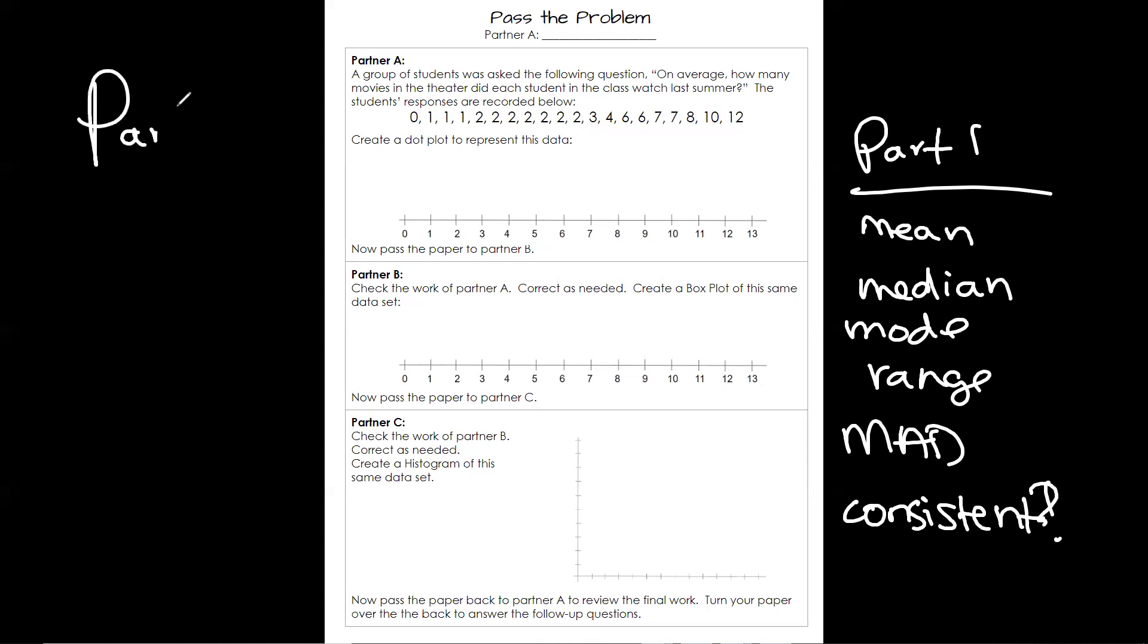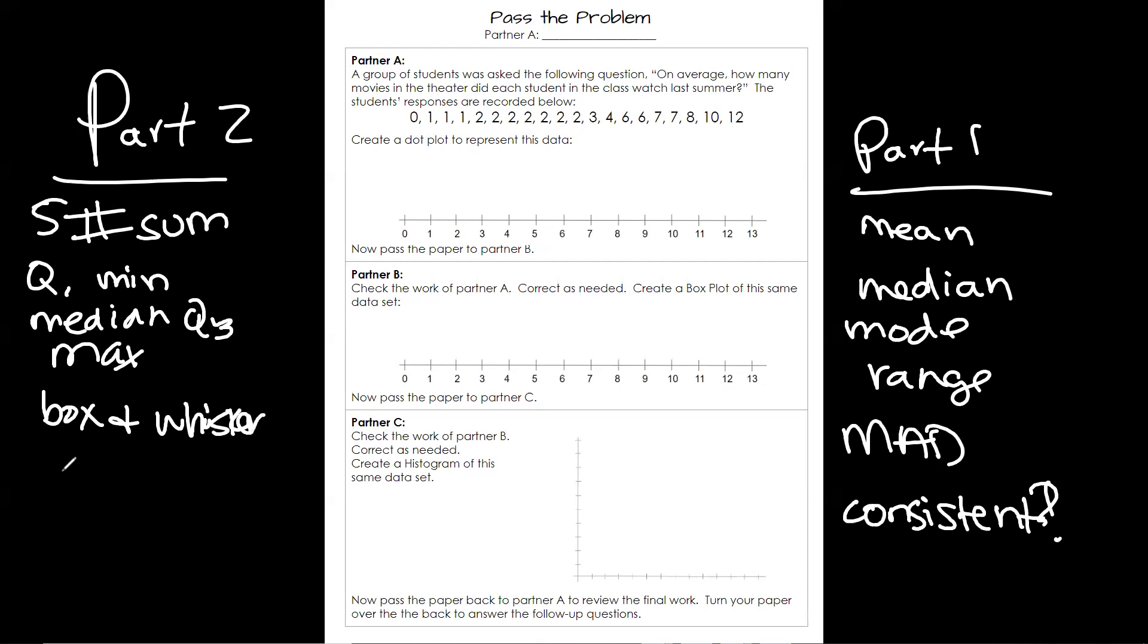Part two is going to ask you for the five number summary, which is Q1, min, median, Q3, max. And then you're going to draw the box and whisker. And then you're going to do the outliers. So part one, part two.